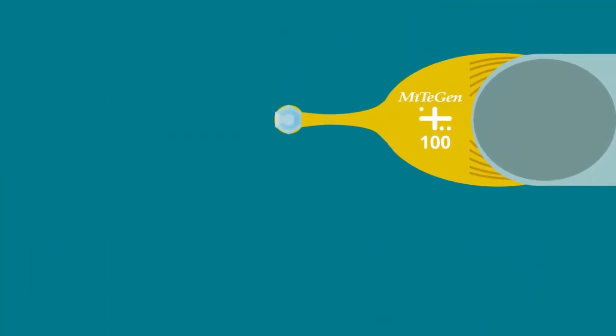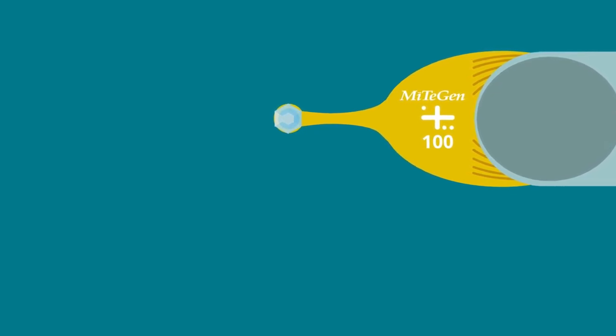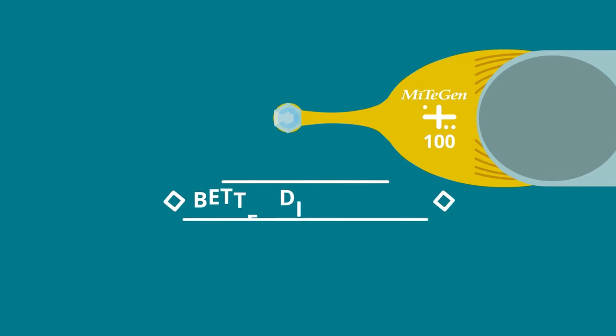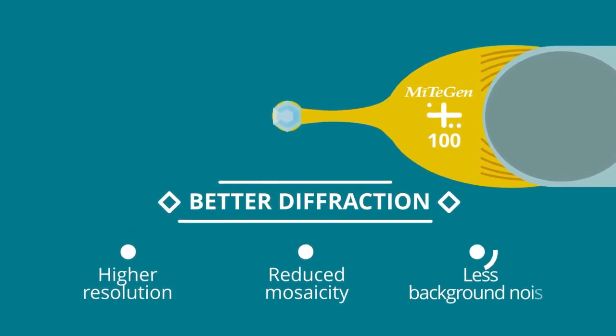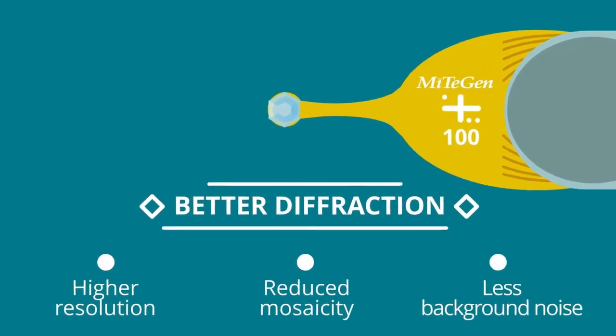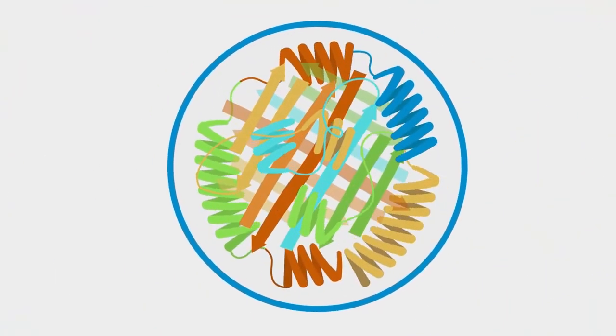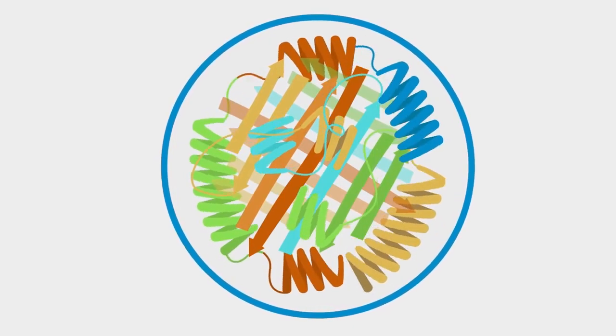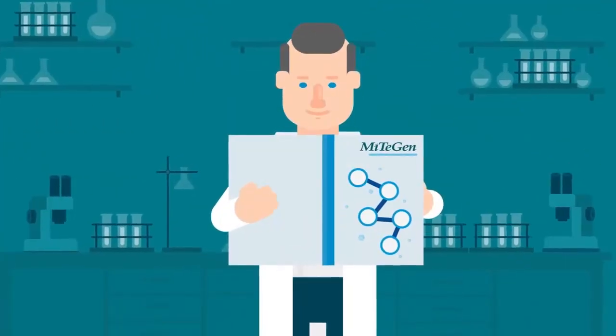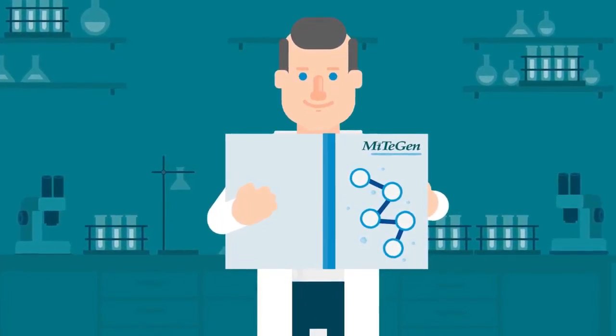With Mitogen micromounts and micro-loops and the on-the-loop mounting technique, crystal quality is preserved, generating better diffraction with higher resolution, reduced mosaicity and less background noise. In the end, structures are solved by the quality of diffraction you obtain, not by the number of crystals you send. Start solving structures using the most advanced method for crystal harvesting.